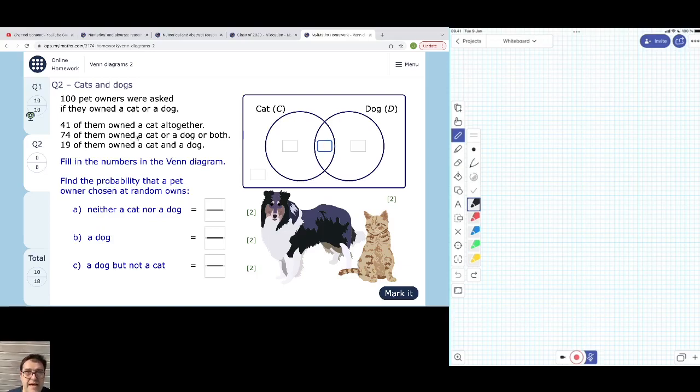74 of them owned a cat or a dog or both. So the whole combination, or to use the proper terminology, the union of the two sets—anything that's inside the two circles. So people who own just a cat, people who own just a dog, or people who own both in the middle, all of that adds up to 74. So we can't put that in the Venn diagram yet, because we don't know how that breaks down.